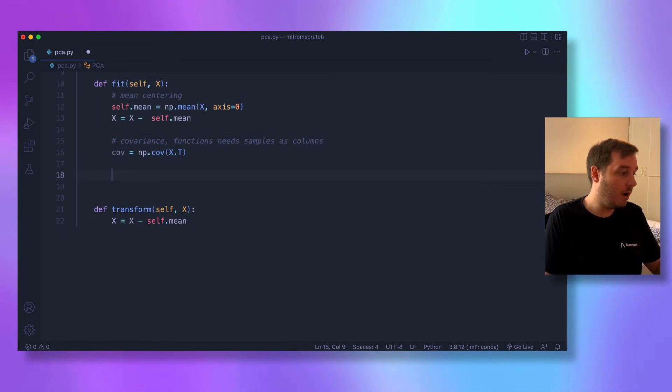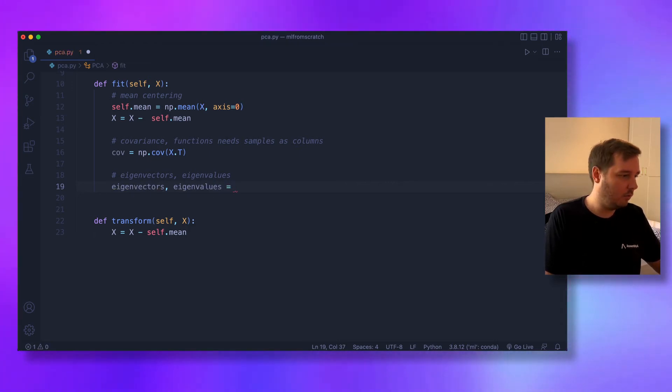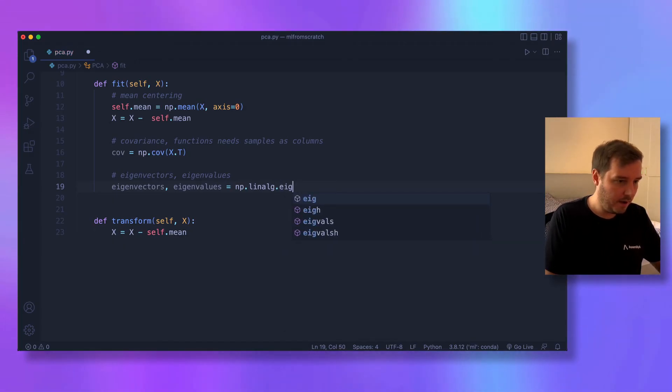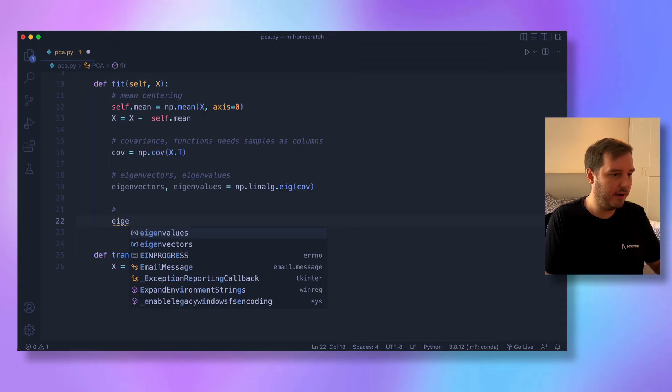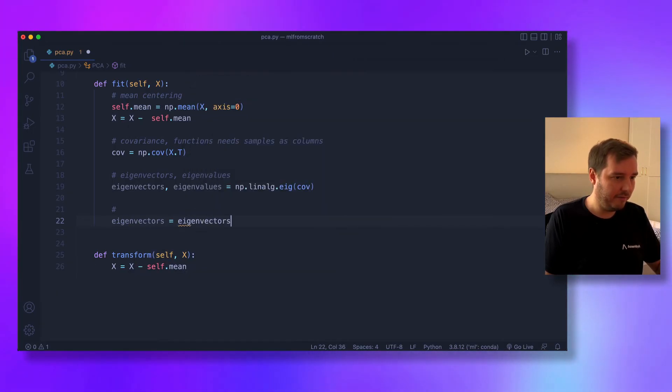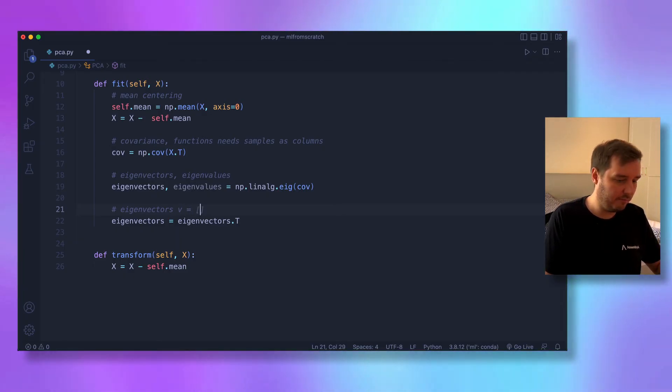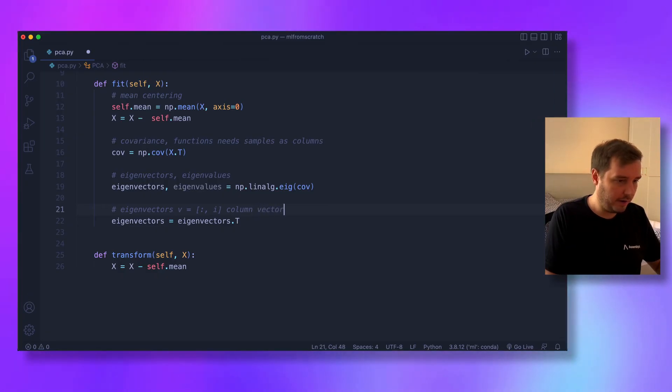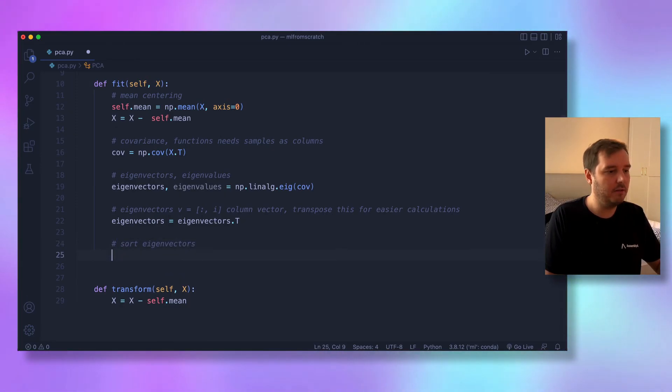Now we calculate the eigenvectors and eigenvalues. We can simply calculate this in one line: eigenvalues, eigenvectors = np.linalg.eig(cov). For easier calculations, we transpose the eigenvectors: eigenvectors = eigenvectors.T. This is because the eigenvectors v = A[:, i] is a column vector, and we want to transpose this for easier calculations later.